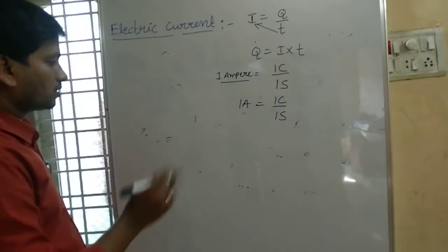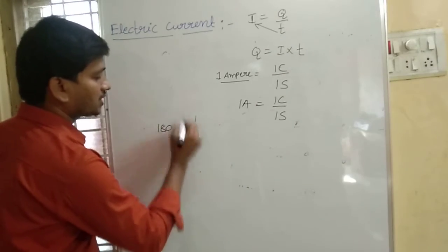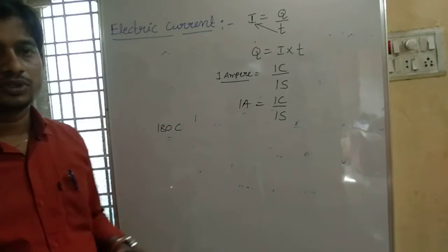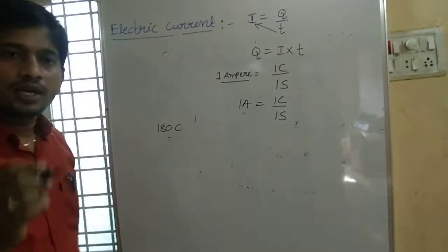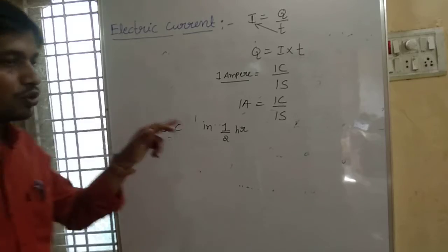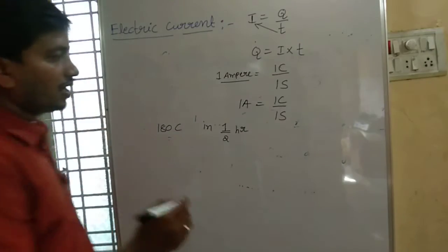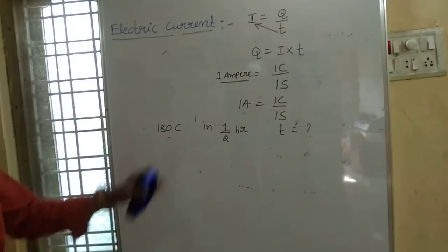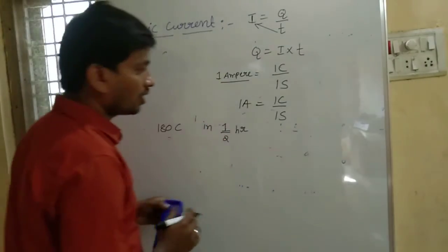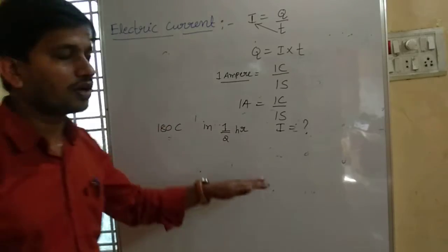Let me explain one example based on electric current. Suppose 180 Coulombs of charge is passing through a cross section of a conductor in half an hour. Then what is the electric current?